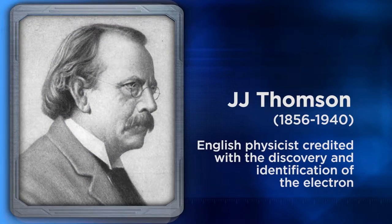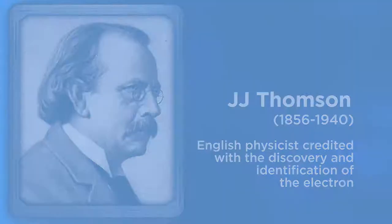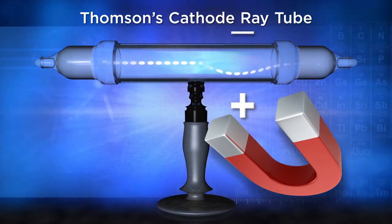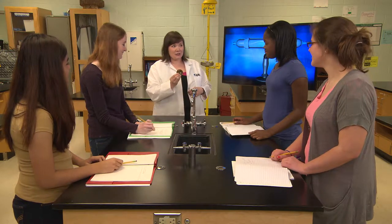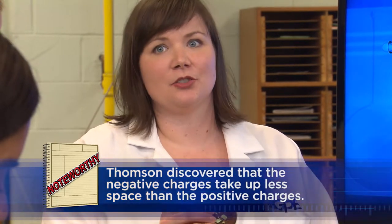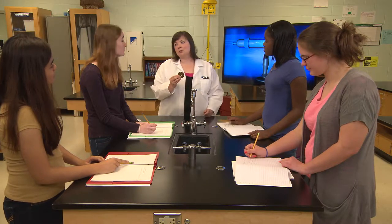In the early 1900s, physicist JJ Thomson was experimenting with a cathode ray tube and discovered the electron — a negatively charged particle in an atom. This discovery led to the plum pudding model of the atom. Most of us have never seen a plum pudding, so it's also called the chocolate chip cookie model. Thomson's model included positive and negative charges; the negative charges take up less space than the positive charges and spread throughout the positive area, like the mint chocolate chips in a cookie, or like the plums in the plum pudding model.